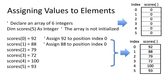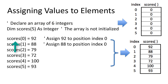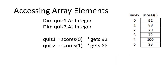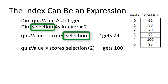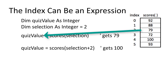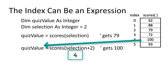Data can be placed in array elements using the equals assignment operator. The first piece of code here is Dim scores as integer. Give the name of the array and the index value inside the parentheses, then use the assignment operator equals to select the value to be placed in the array element. Data can be retrieved by giving the name of the array and the index value inside parentheses. The variable quiz1 is going to receive a 92 from the first element in the scores array. Using selection as the index, initialized to 2, scores(selection) retrieves 79, and scores(selection + 2) retrieves 100 because selection plus 2 equals 4.